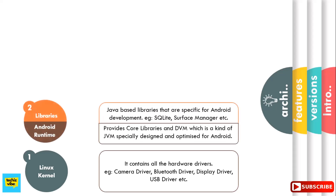The second layer has two sections: libraries and Android runtime, on top of the Linux kernel. In libraries, there is a set of libraries including open source web browser engine WebKit, the well-known library LIBC, SQLite database, libraries to play and record audios and videos, surface manager, etc. Android runtime provides core libraries and DVR, that is Dalvik virtual machine, which is a kind of Java virtual machine specially designed and optimized for Android.